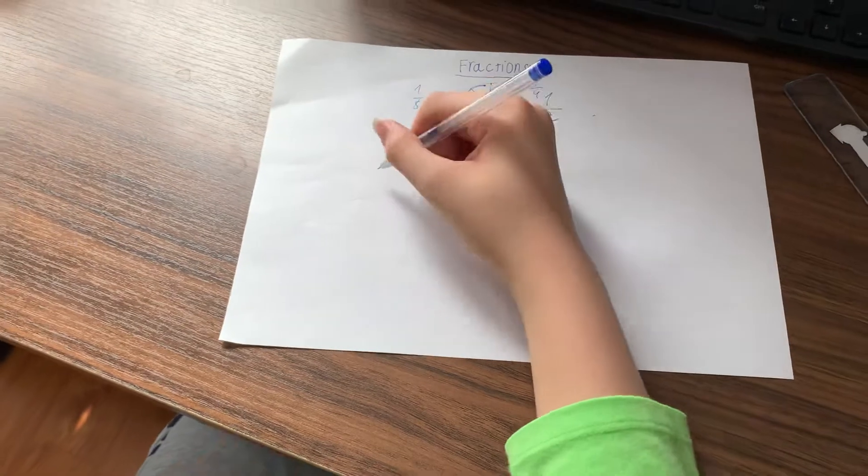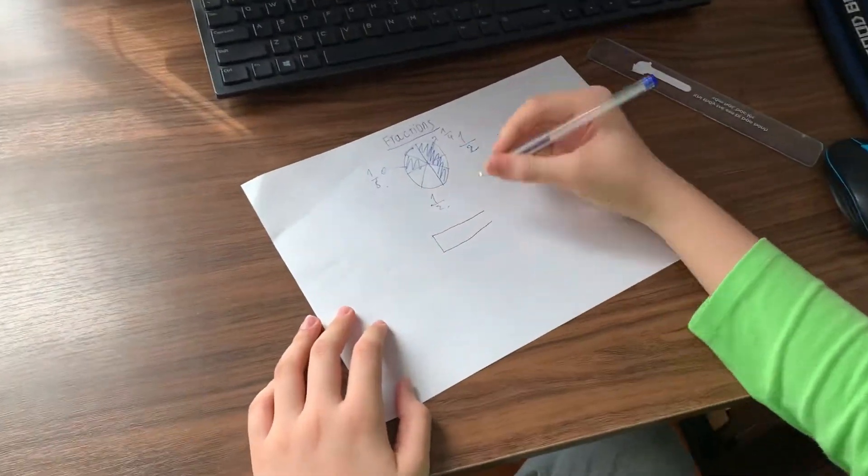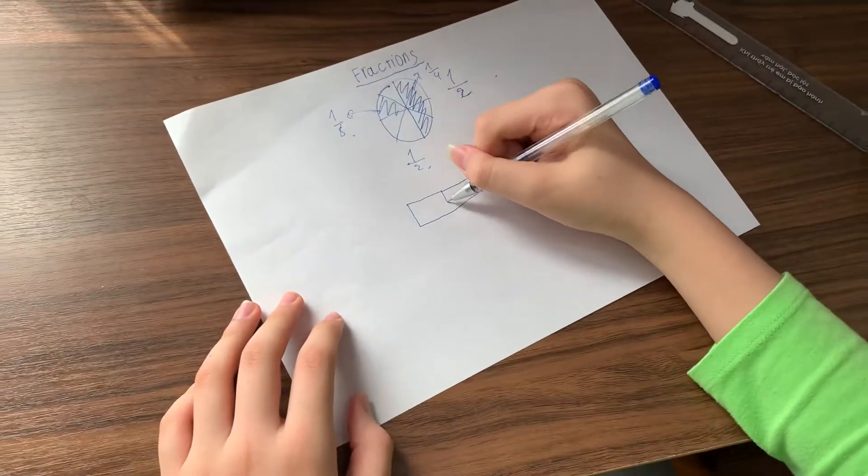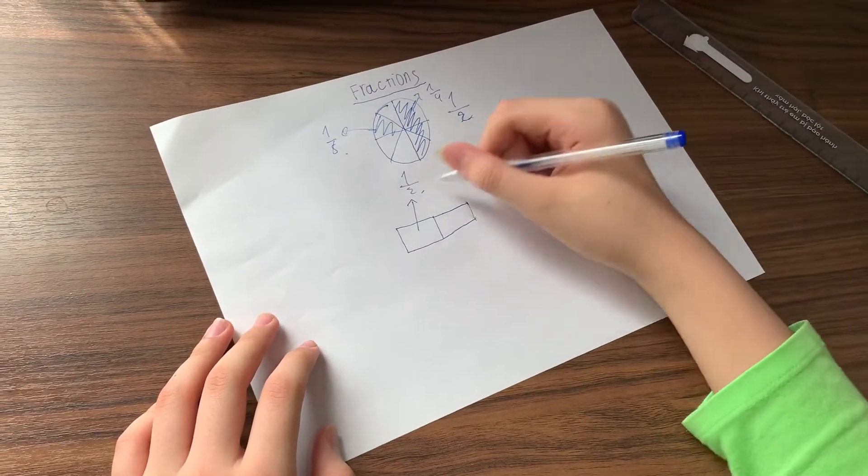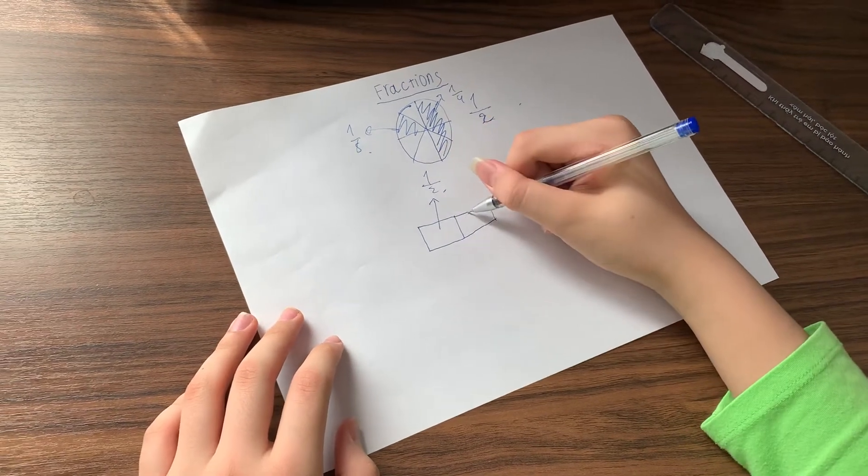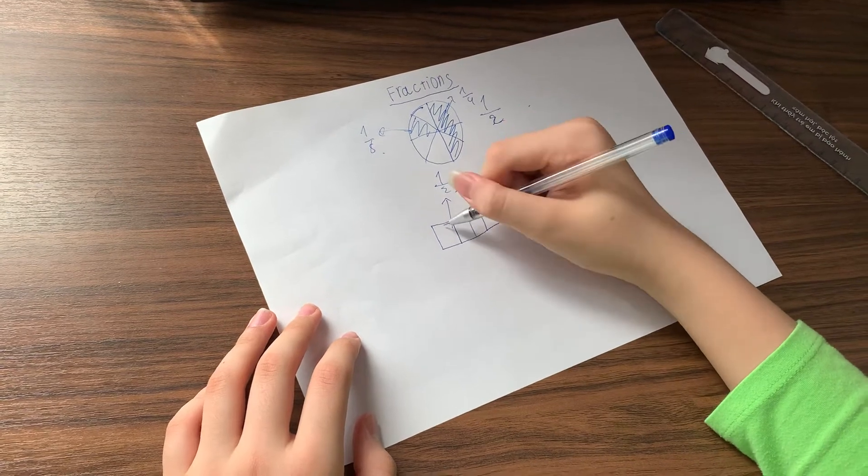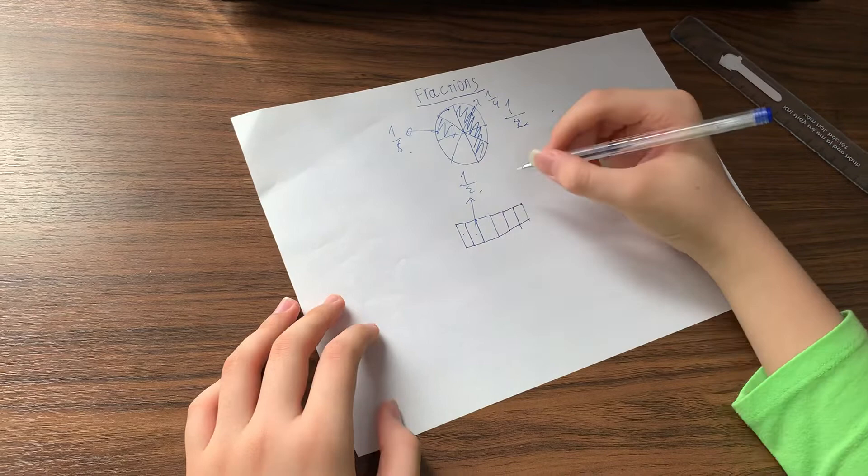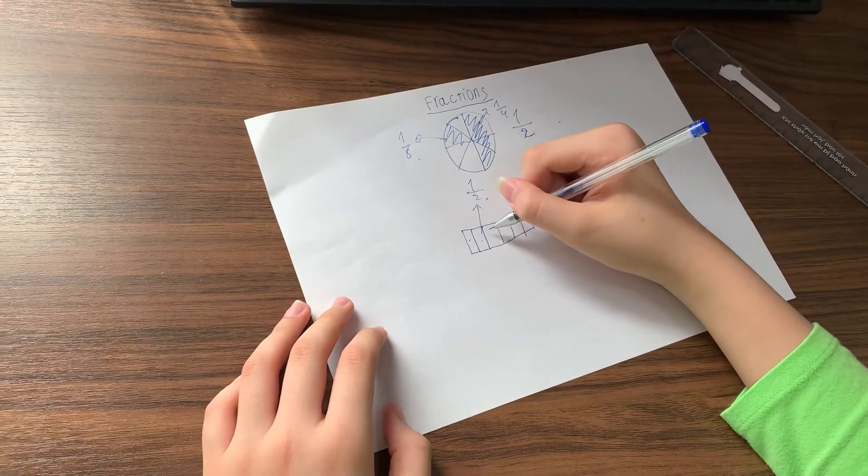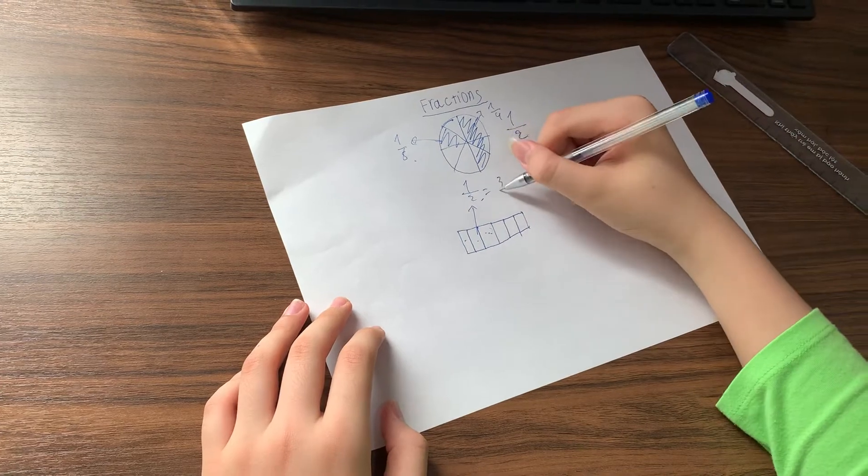But watch here. This is a rectangle, right? You divide into two parts. Now this is one half. And you divide even further. Do this. And then you have one, two, three, four, five, six. This part is equal to this. So it's equal to three sixths.